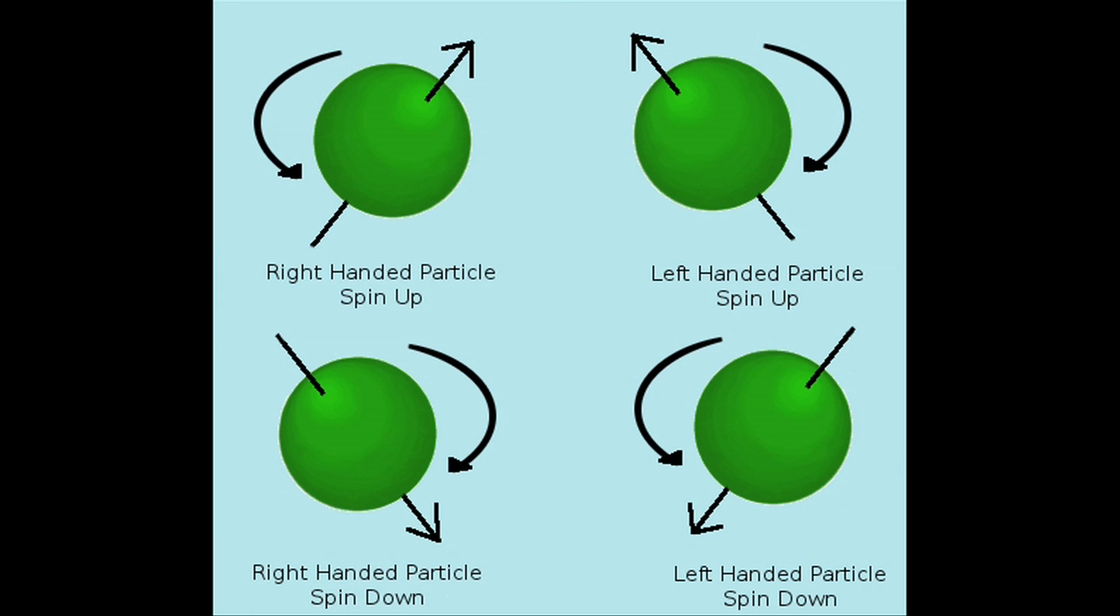Spin is, if one really thinks about it hard, a very weird quantity. Probably for the layman and also for many physicists, the easiest way to make a picture for it is to say the particle has an angular momentum by spinning around itself. That's how it got its name.